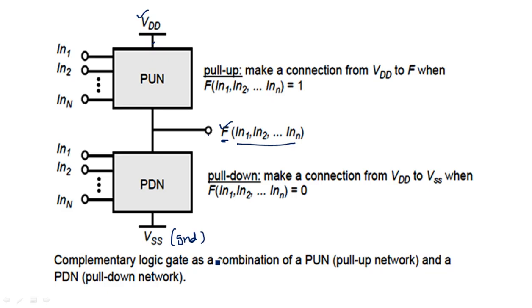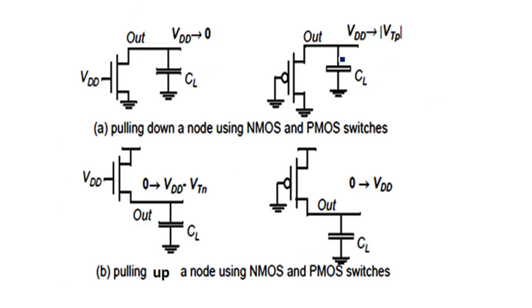VSS is nothing but the ground potential. A complementary logic gate is a combination of the pull-up network and pull-down network. The pull-up network makes a connection from VDD to output when the function equals one, and similarly the pull-down network makes a connection from output to VSS when all inputs equal zero.